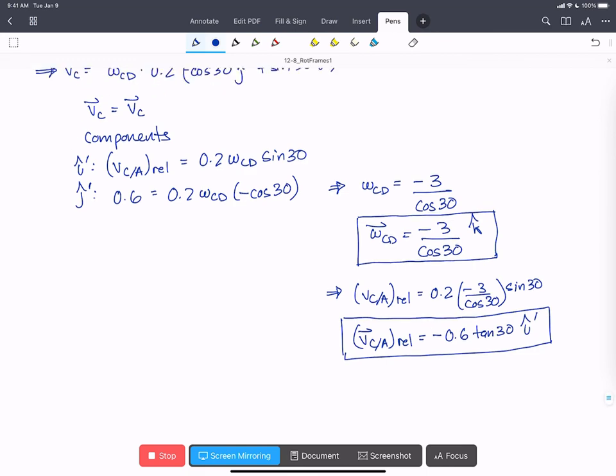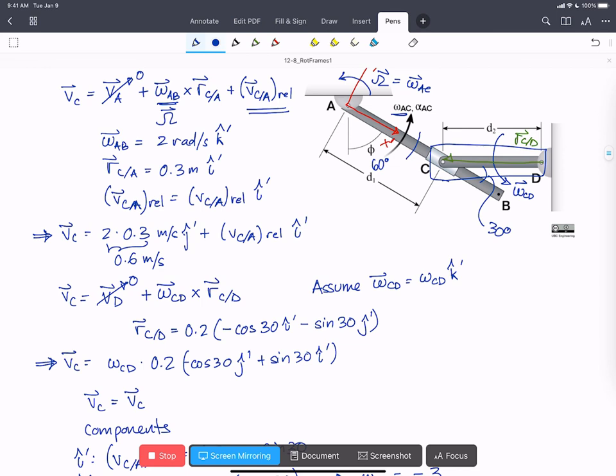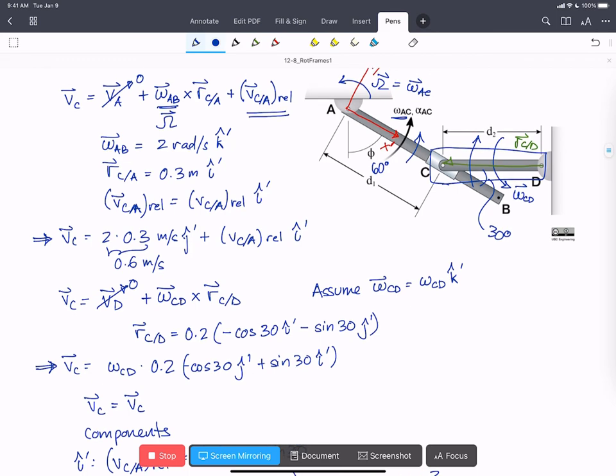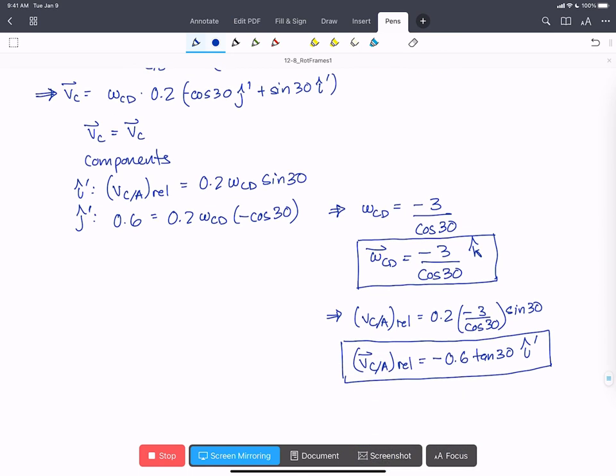And if we look back at our diagram, this kind of makes sense. If the rods are moving this way, then as they come to being in line with each other, C has to move closer to A in order for the rods to do that. And that's what we find. We find CD is moving in the direction as we just showed, and C is moving closer to A in the minus i-hat prime direction.